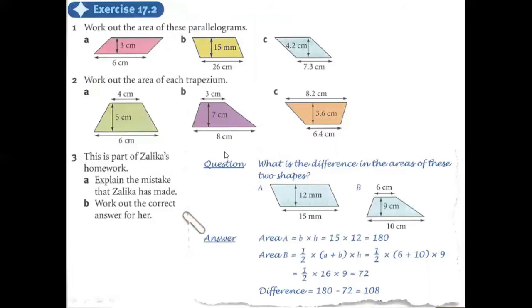Now let's start the questions. Question 1 is straightforward: simply 6 multiplied by 3 equals 18, so just write 18. For question 2, 26 multiplied by 15. For question 3, multiply 7.3 by 4.3. For the Trapezium question, add the two bases: 8 plus 3 equals 11, then 11 multiplied by 7 equals 77, divided by 2 gives your answer. Similarly, multiply 6.4 and 3.2, then take half of that number for your answer.